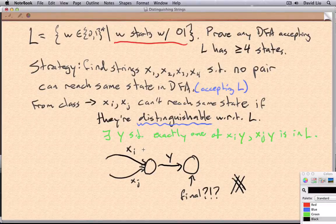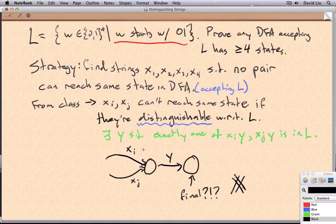But if we pick a different pair in order to show that that pair is distinguishable, we can pick a completely different Y, and that's okay.